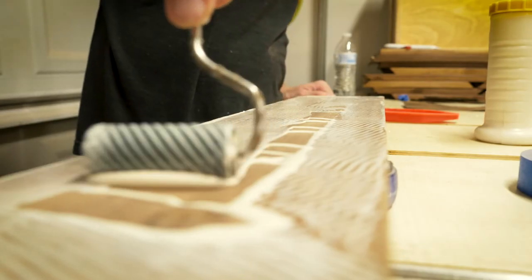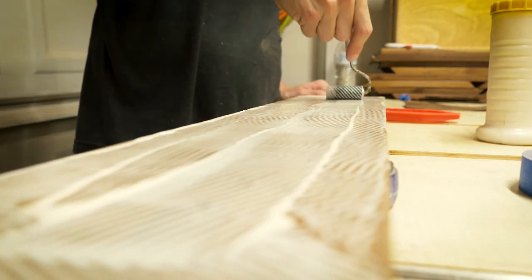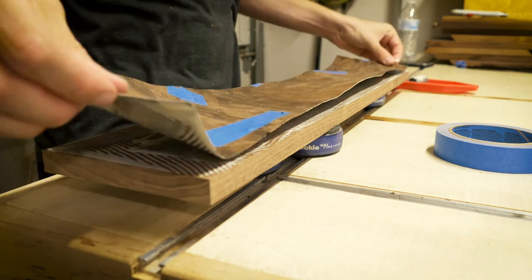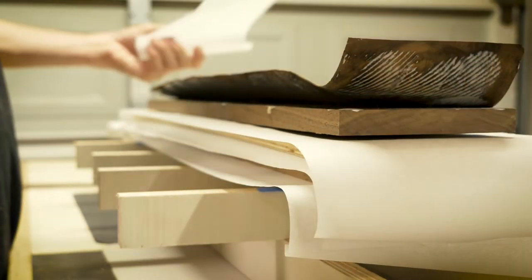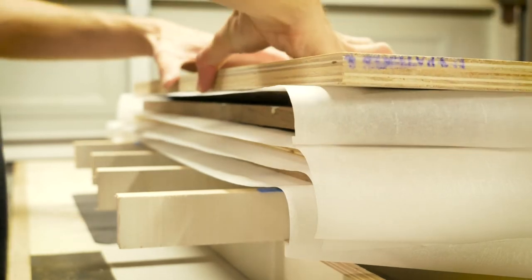This method is as simple as adding glue to your backer board and to the back side of the veneer. To clamp everything together I put all my pieces sandwiched between some plywood boards and put the same cauls that I used to flatten the veneer on the top and bottom side.